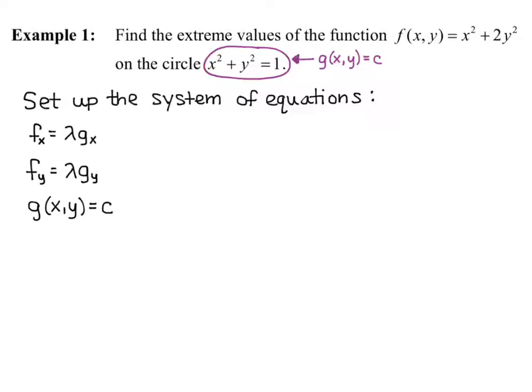The partial derivative of f with respect to x equals lambda times the partial derivative of g with respect to x gives us 2x equals lambda times 2x. The partial derivative with respect to y gives 4y equals lambda times 2y. So we take these derivatives of f and g, and the constraint is the circle x squared plus y squared equals 1.